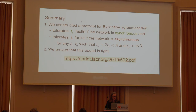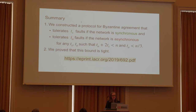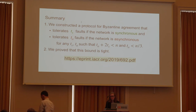To summarize: we constructed a Byzantine agreement protocol that tolerates TS faults if the network is synchronous and TA faults if the network is asynchronous, as long as TA + 2TS < N. We prove this bound is tight with our impossibility result. Thank you very much.